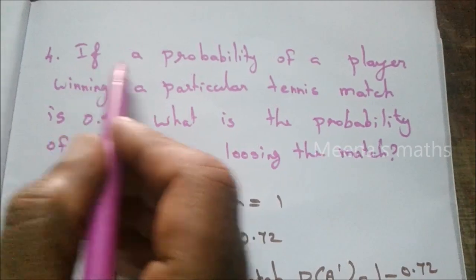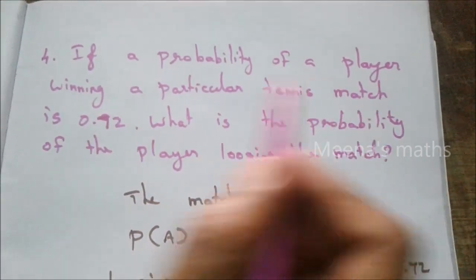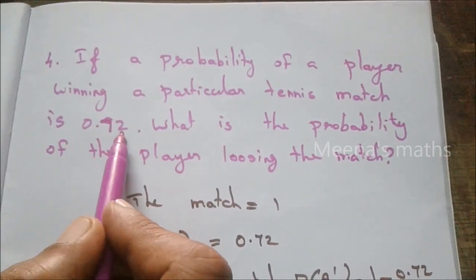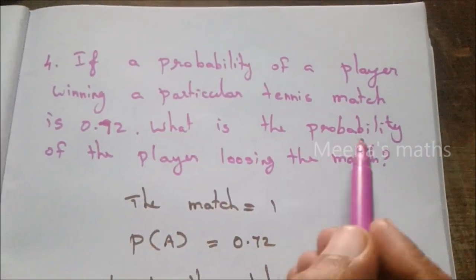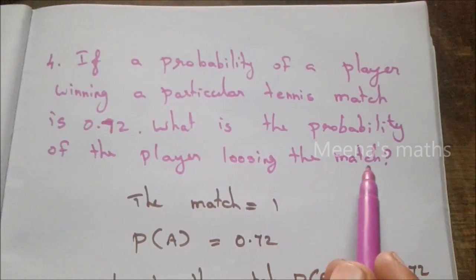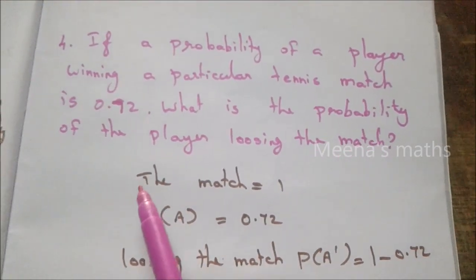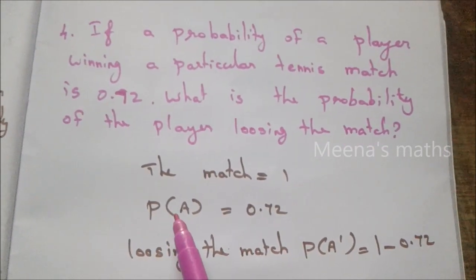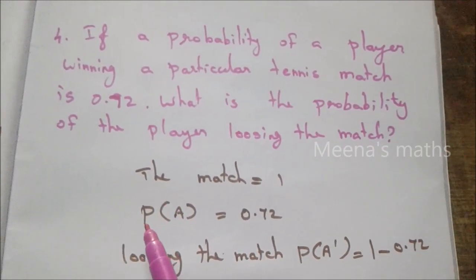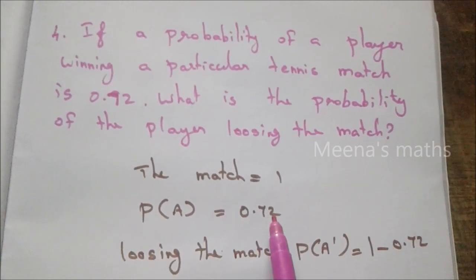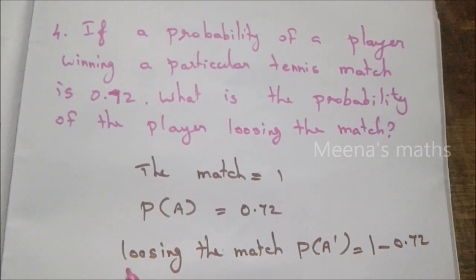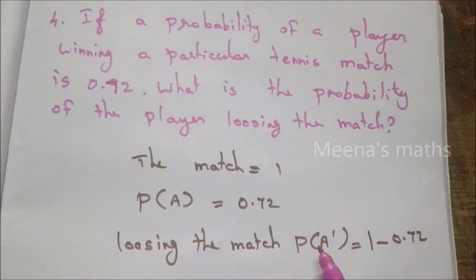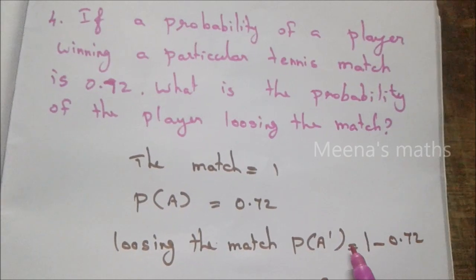Problem 4. If the probability of a player winning a particular tennis match is 0.72, what is the probability of the player losing the match? Since total probability equals 1, and probability of winning is 0.72.